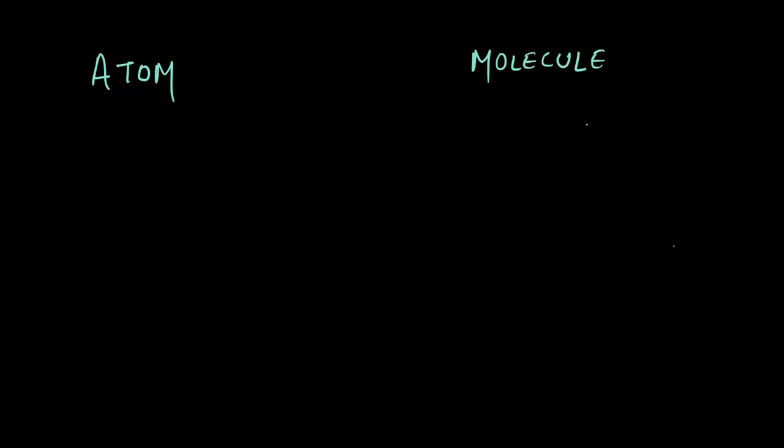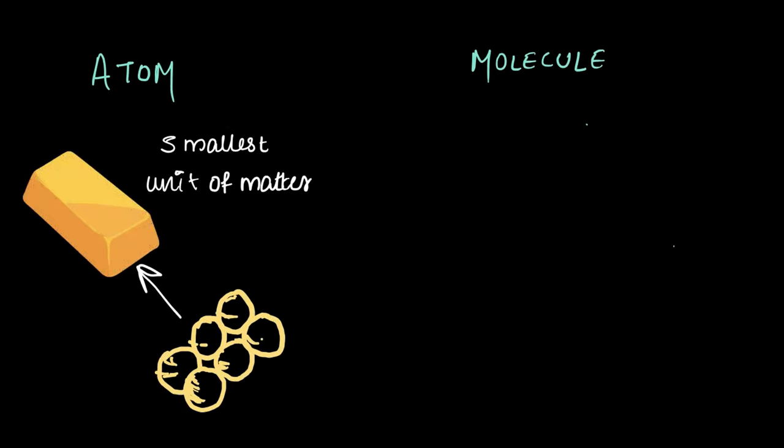So to summarize what we have learned in this video: an atom is the smallest unit of matter that is uncuttable or indivisible. Atoms combine to form elements. For example, as you see here, individual gold atoms come together to form a gold bar.